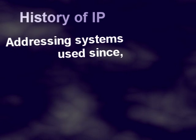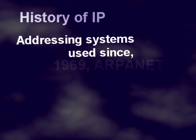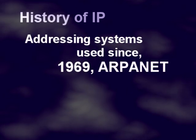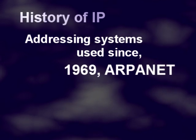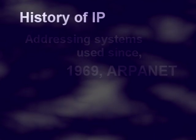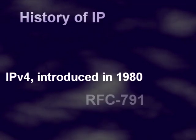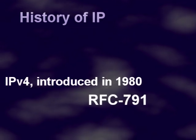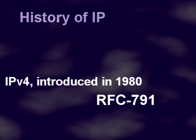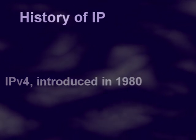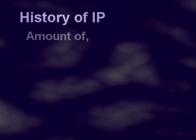A brief history of IP addressing: an addressing system has always been needed to identify other computers on networks since the first network, ARPANET, in 1969. IP version 4 was introduced in 1980 to 1981, documented in RFC 791.